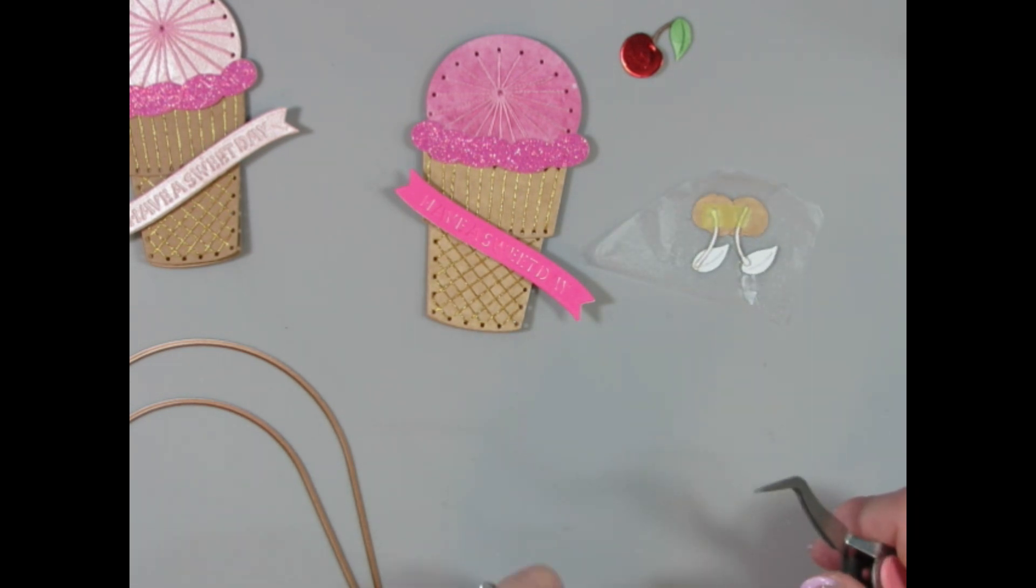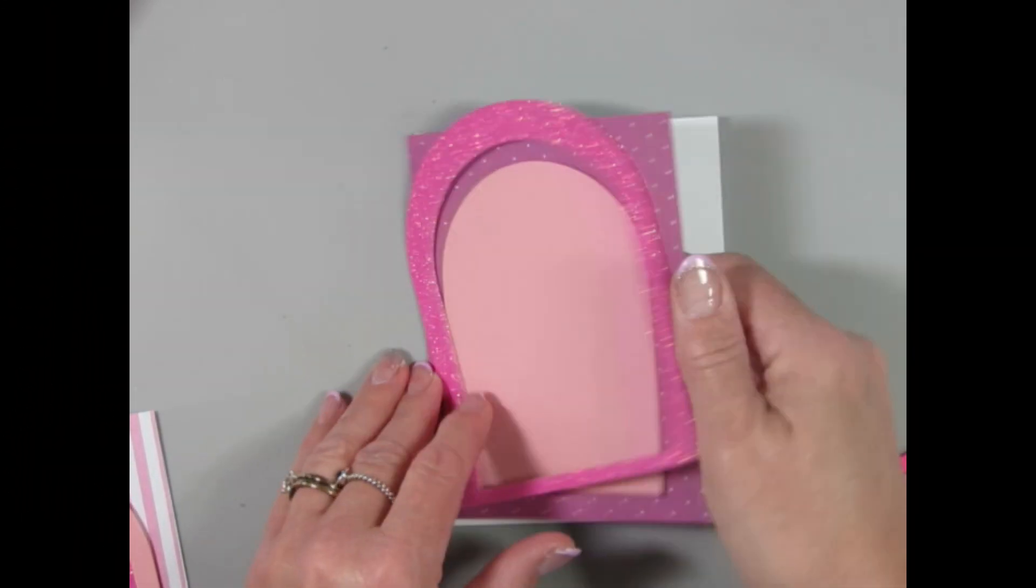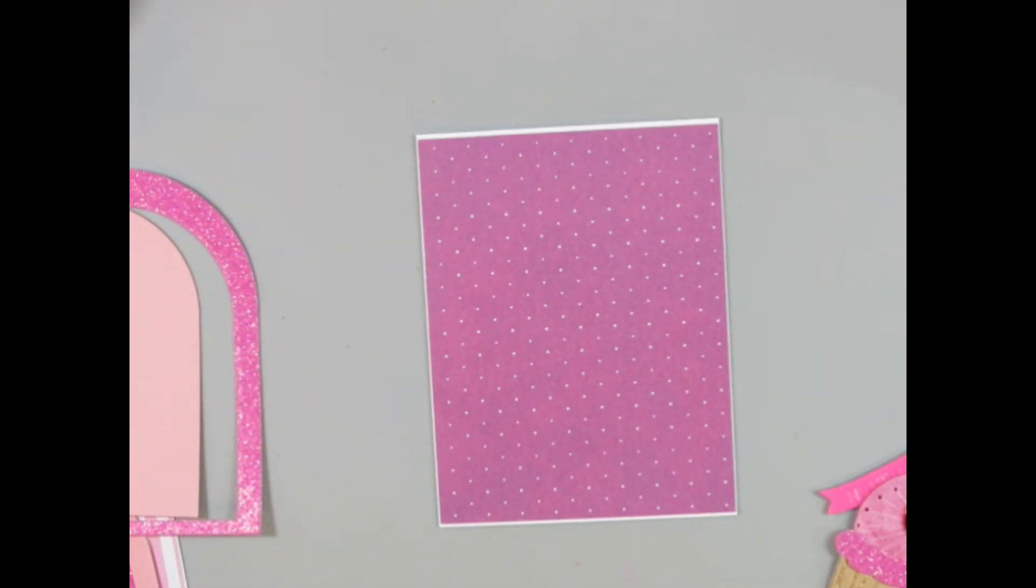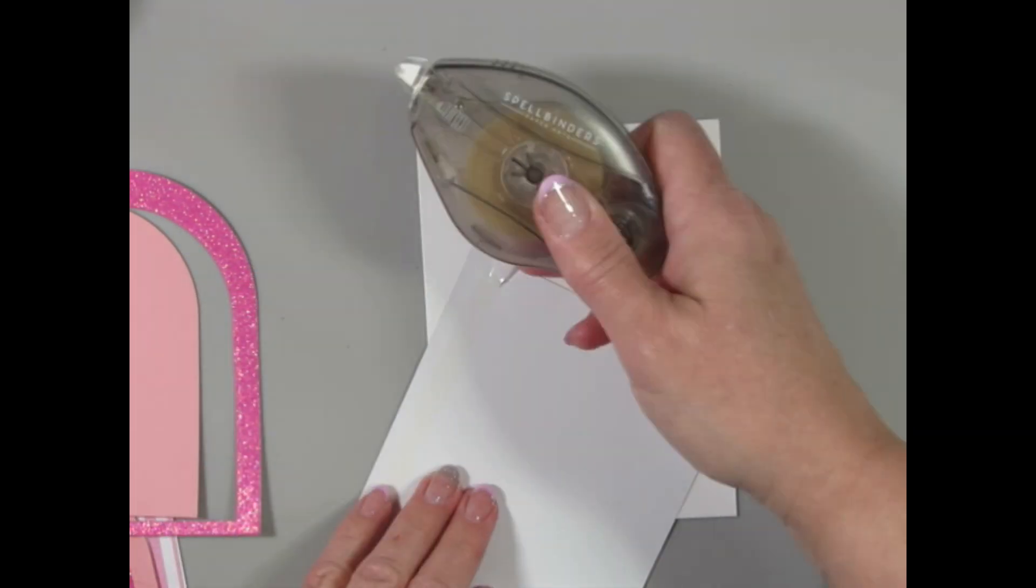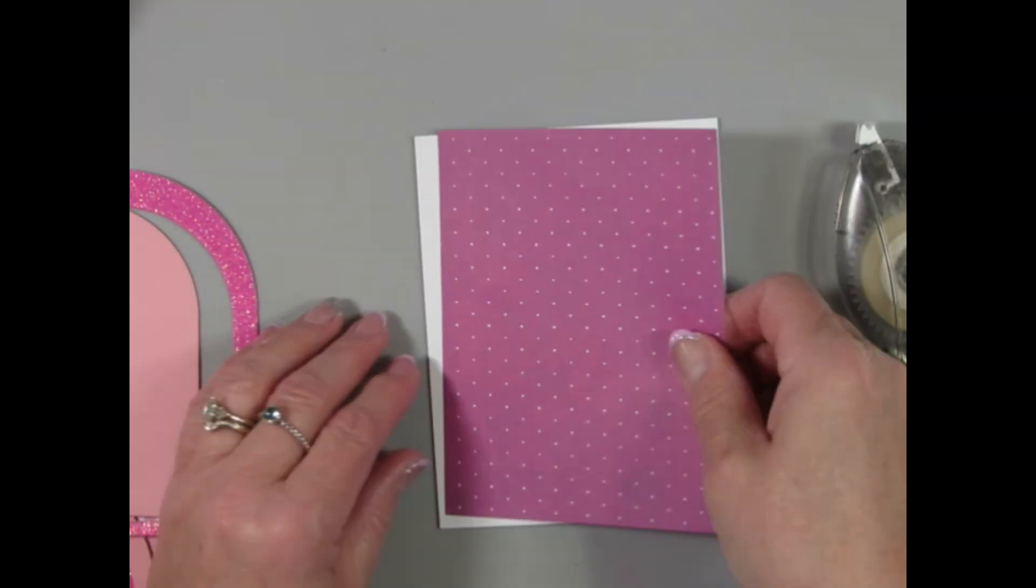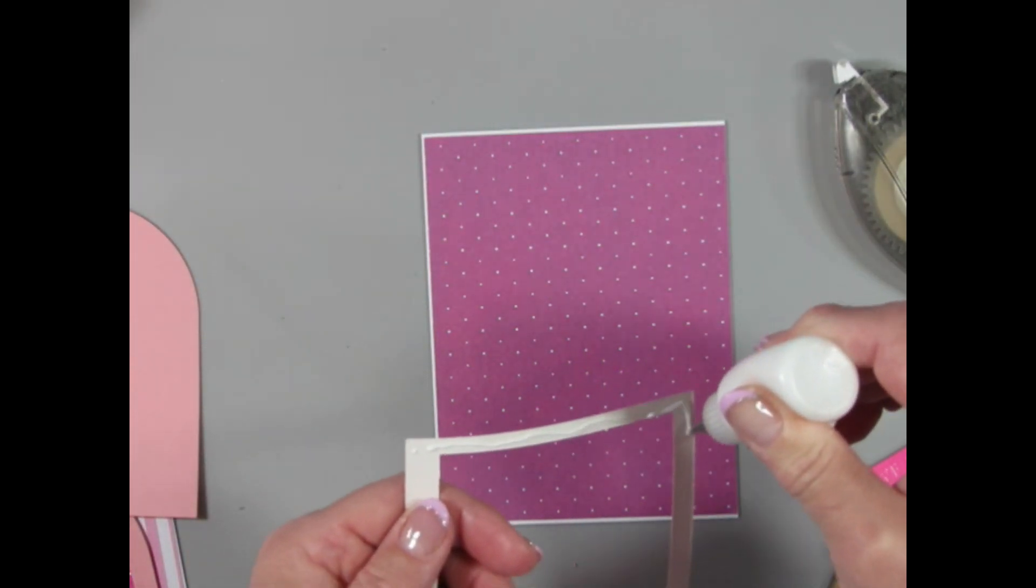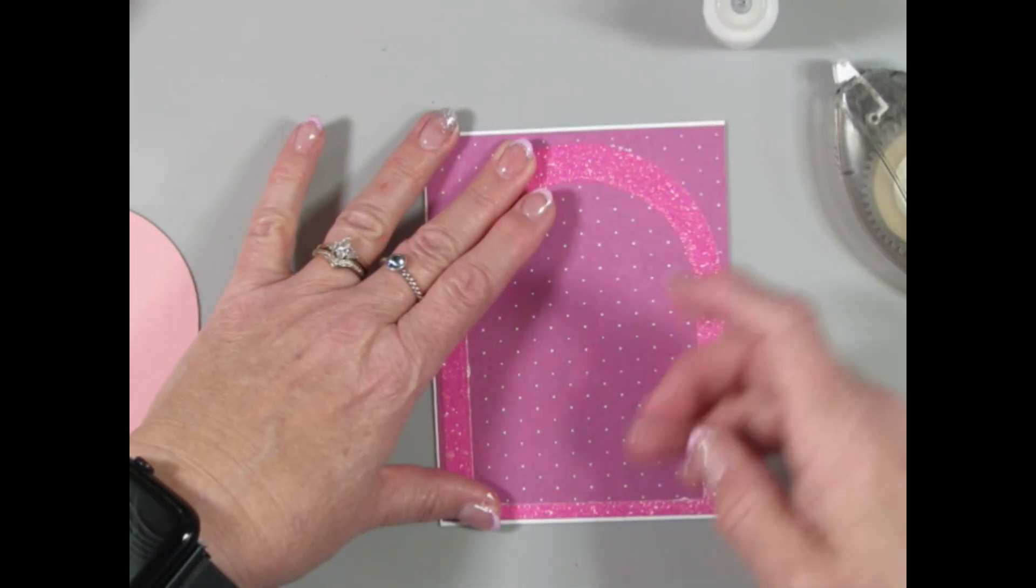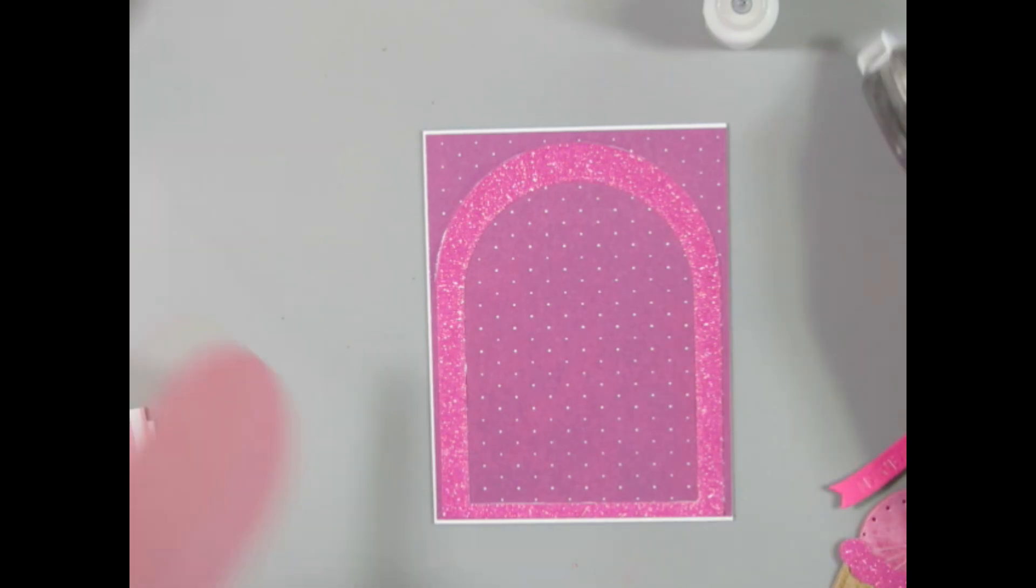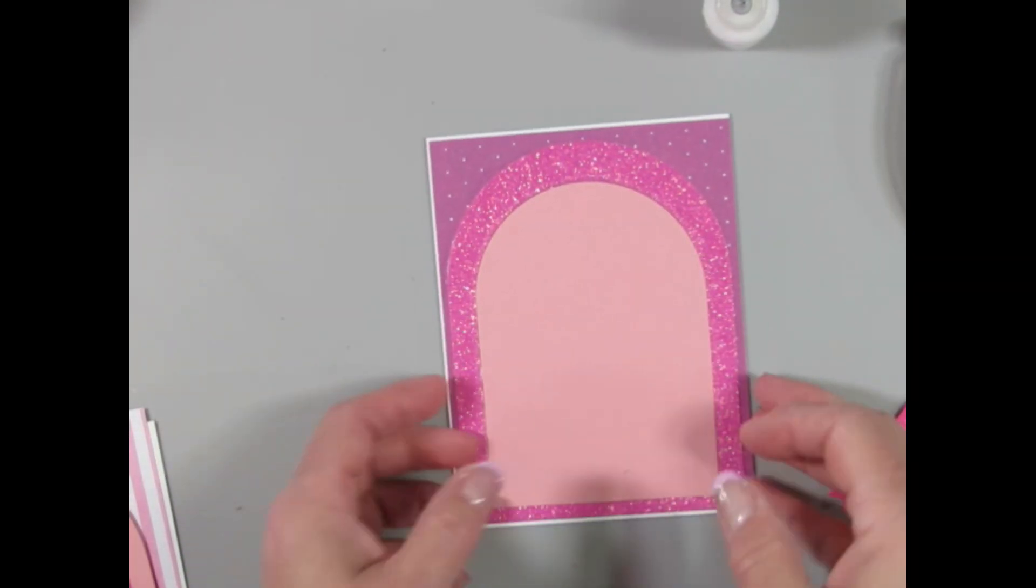I'm just cleaning up some of the glue here that oozed out when I was applying it to the little cherries. This is some Spellbinders paper from a while ago that I had left over in my stash. It's like a pattern paper. You can use any color. I used a purple color. And then over top of that, I put one of the arches.